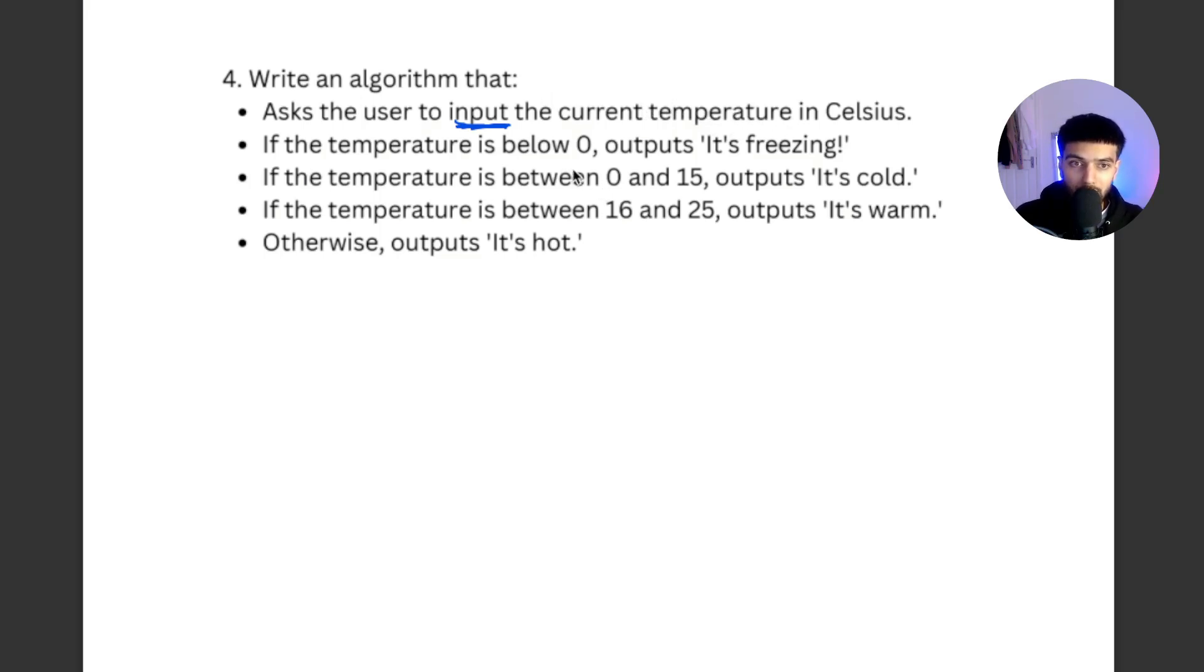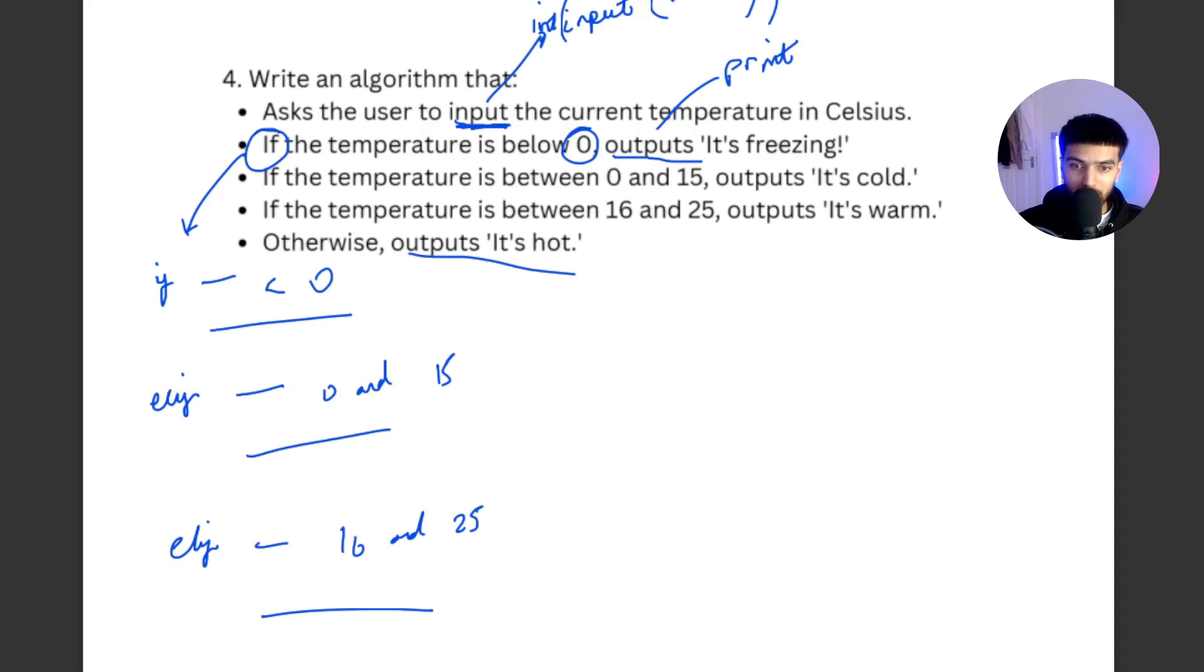And then if the temperature is below zero, so output is another thing that we're going to be doing. We know that it's going to be input and we're taking an integer, so make sure you int that. If it's between zero and 17, so again, we're going to be using some sort of selection. So if something is less than zero, then we do something, else elif the temperature is between zero and 15, we're going to do that. And elif if it's between 16 and 25, we're going to do something else. And otherwise we output it's hot, so default else is going to be it's hot. This is the way that I would plan the answer.